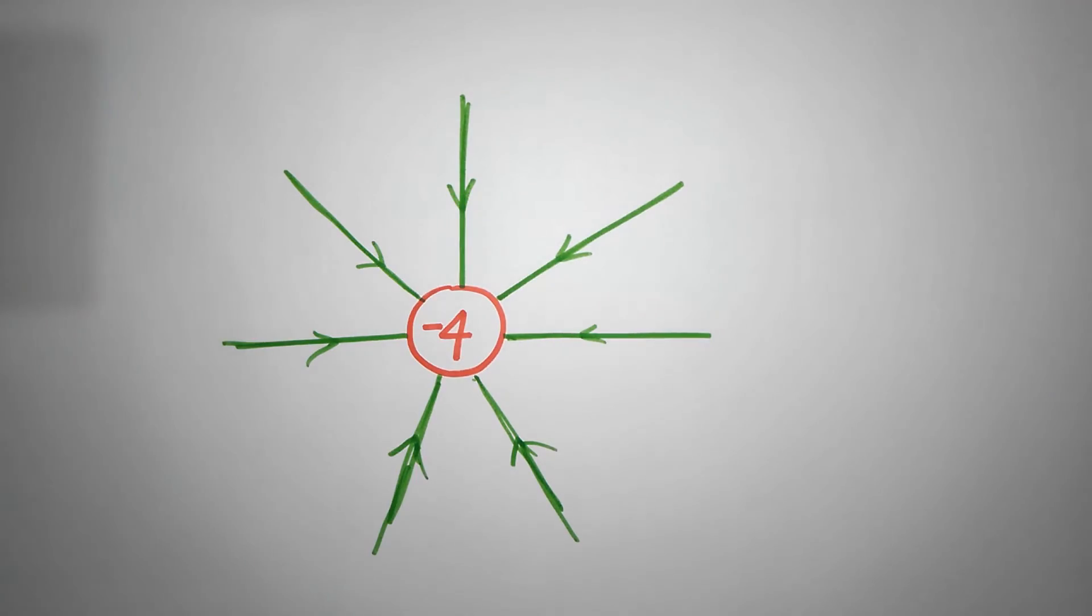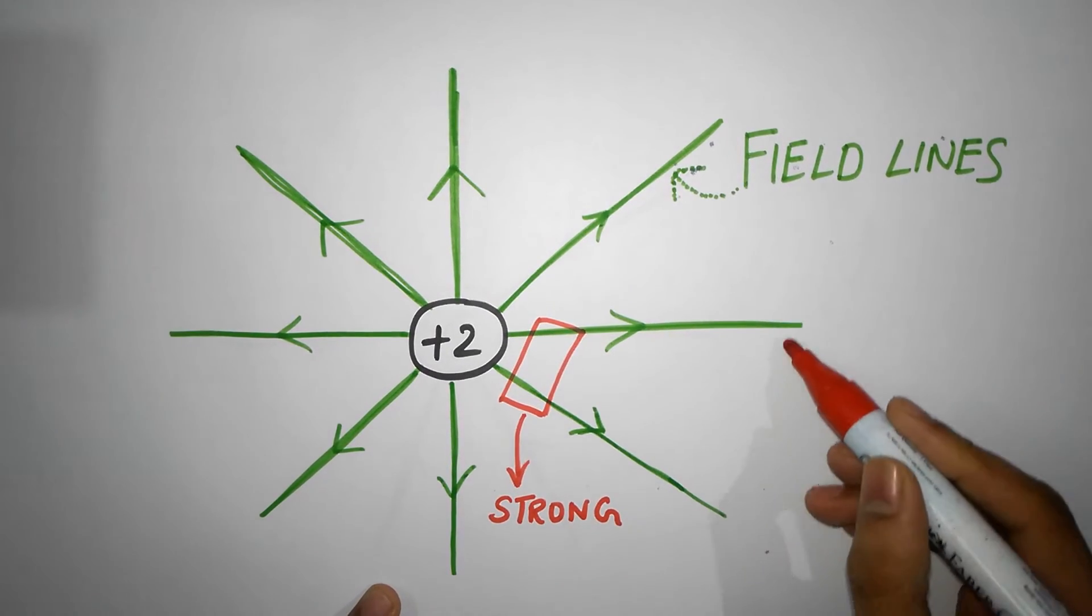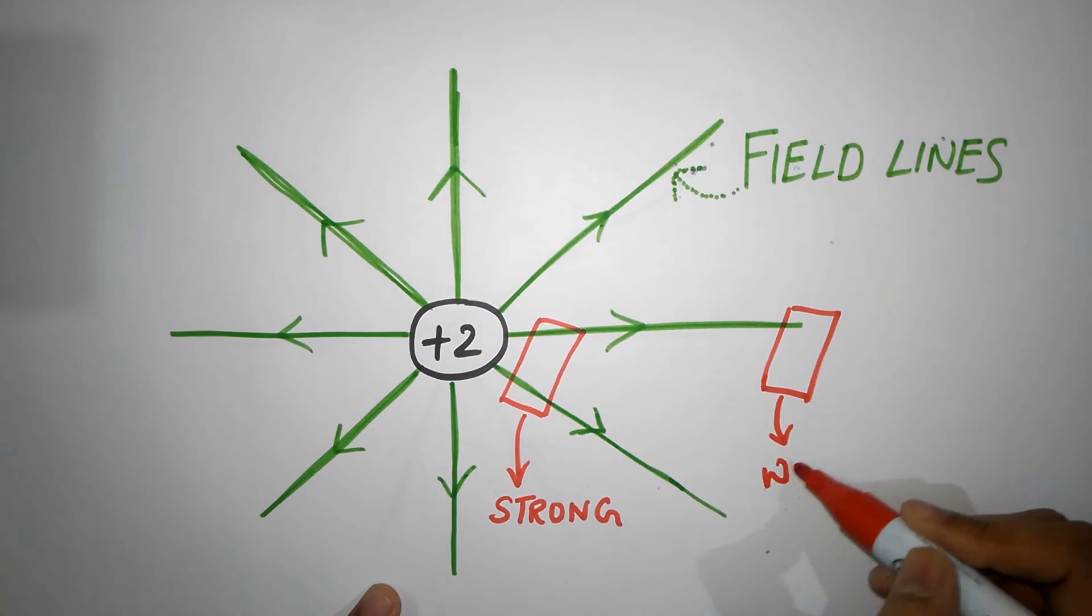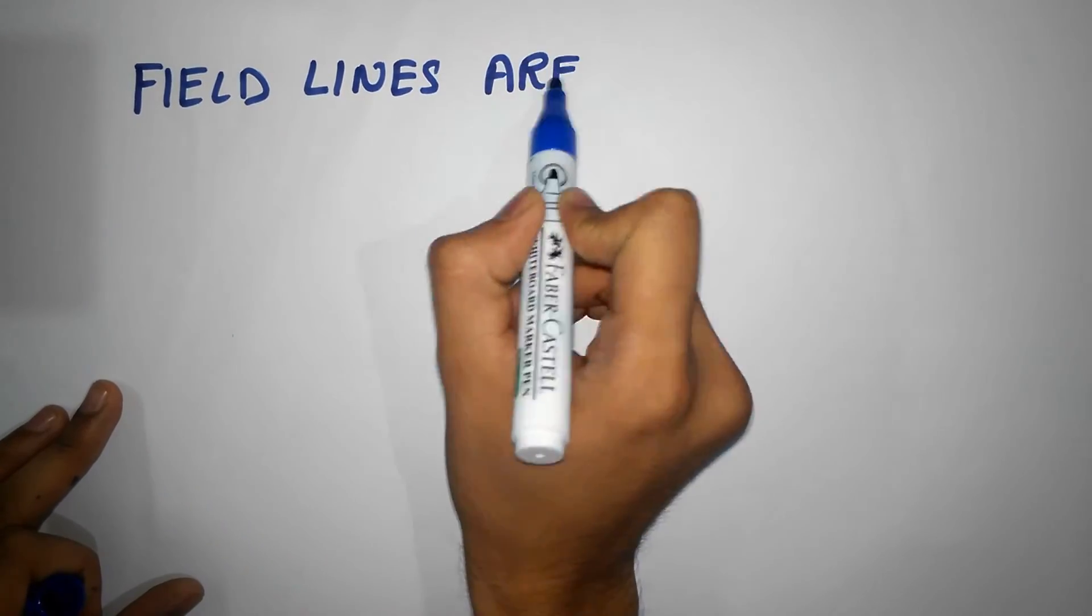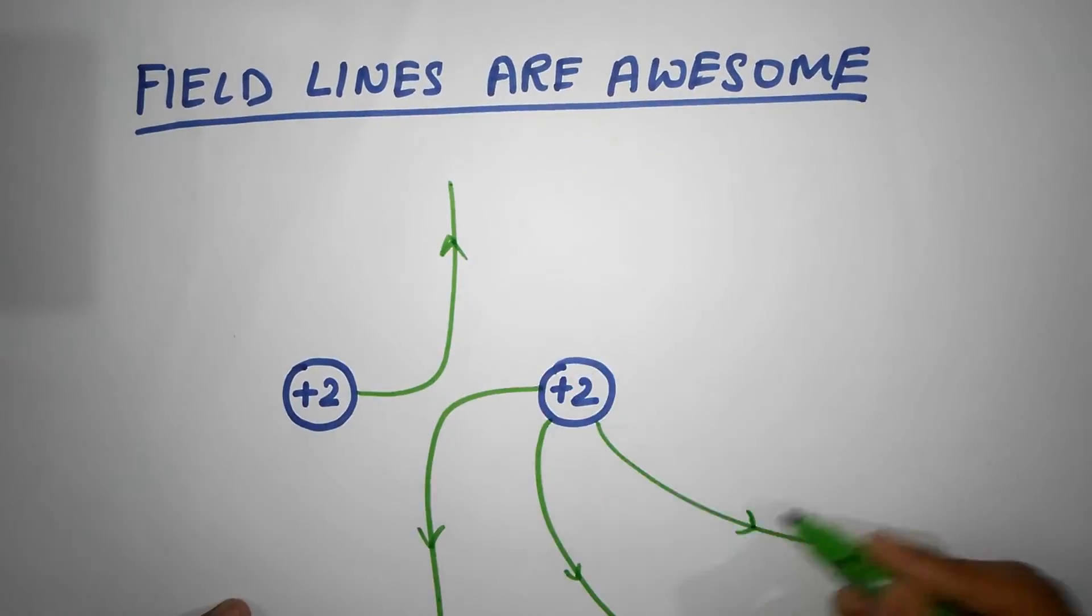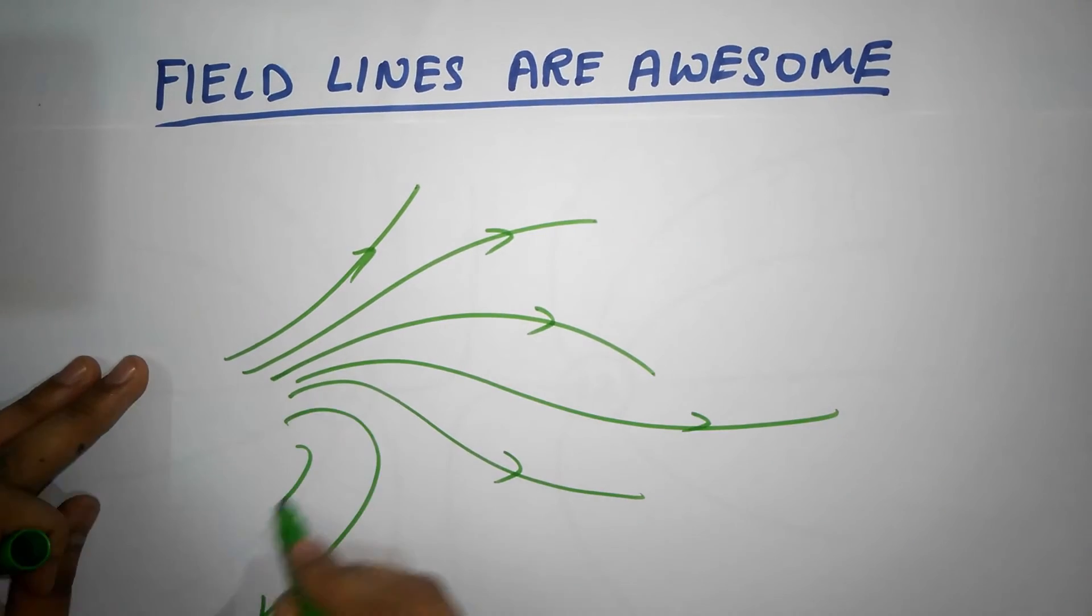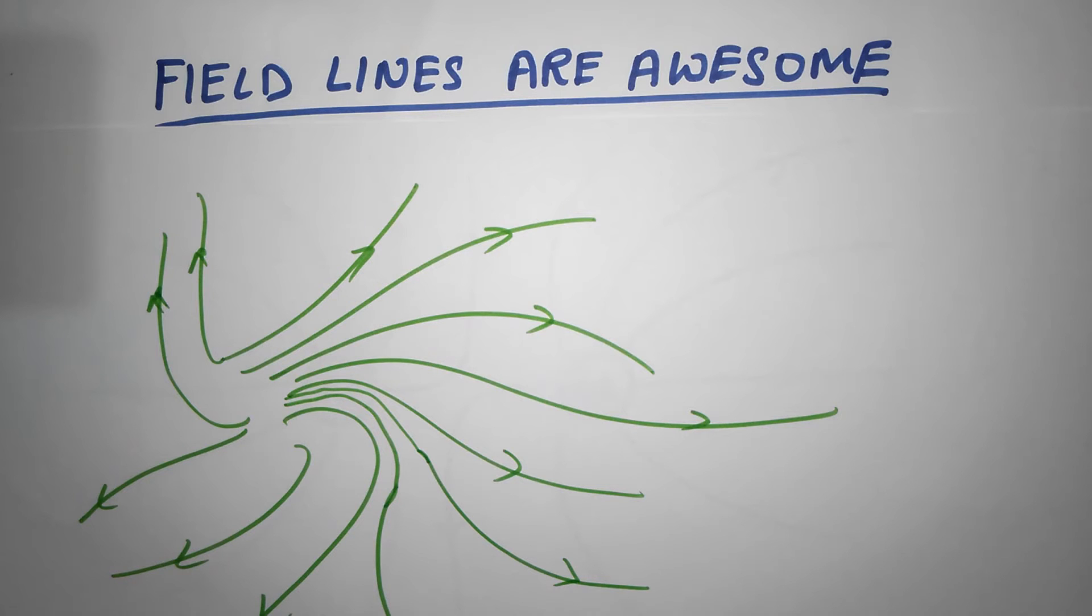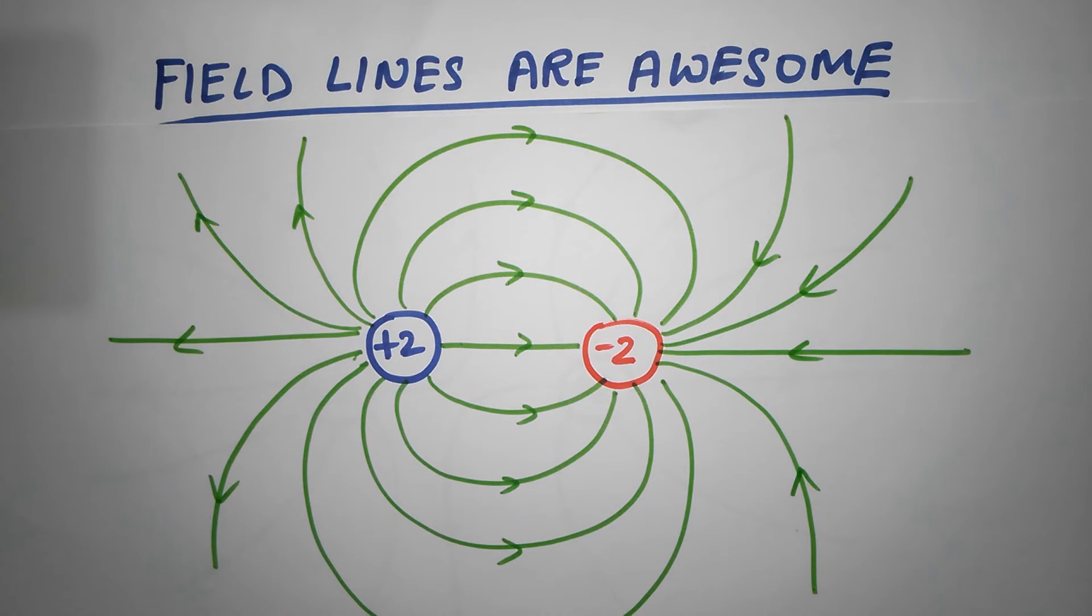Even without numbers, these field lines help us understand where the strength is more. Where the field lines are closer, the field strength is higher. Now field lines are a great way to quickly understand how the space is modified by the electric influence, and they come in various varieties. Some are very simple, but sometimes some can be very complicated with curvy field lines, and some are pretty unique and beautiful.